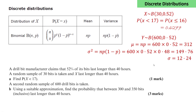The standard deviation is the square root of this value, or 12.24. Part b says: using a suitable approximation, find the probability that between 300 and 350 bits last longer than 40 hours. As n is large — 600 — and the probability of success 0.52 is close to 0.5, we can make a reasonable approximation to a normal distribution with the same mean and standard deviation.